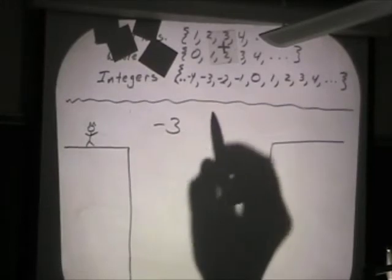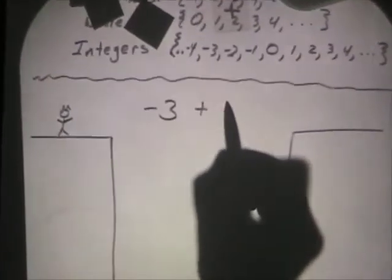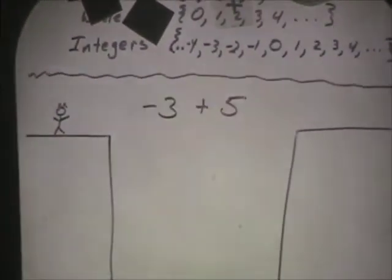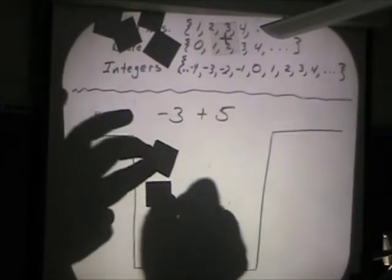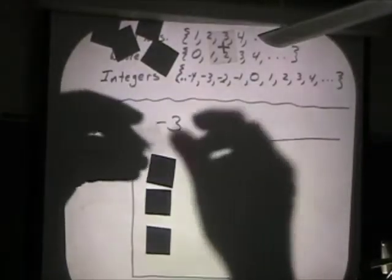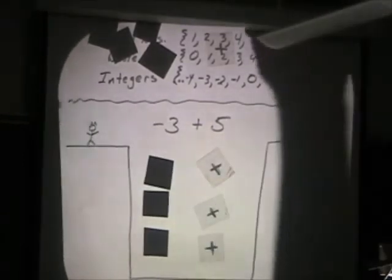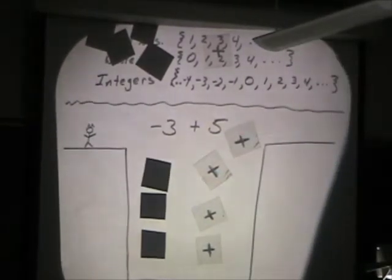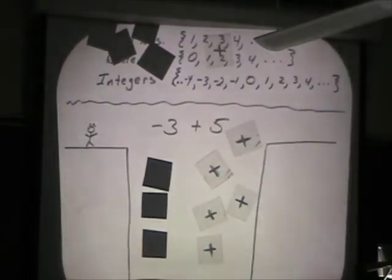I put in negative three and then I add five positives. All right, let's see what this looks like. One, two, three. I've got negative three in the pit. Now I've got to put in five positives: one, two, three, four, five.